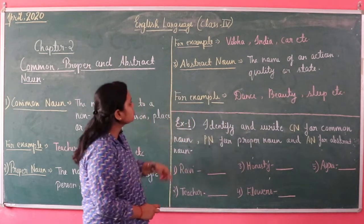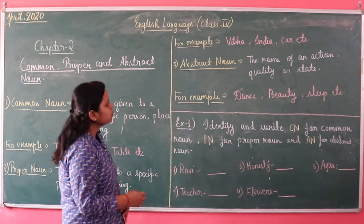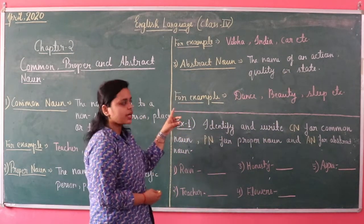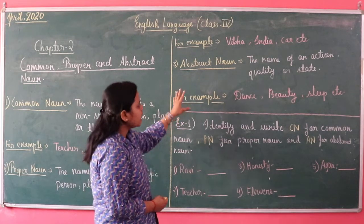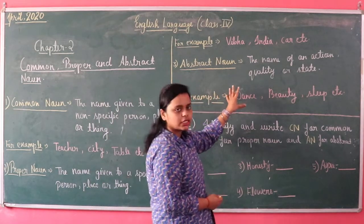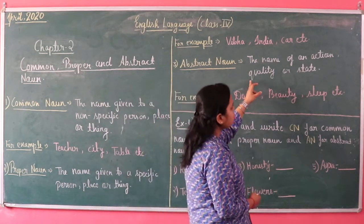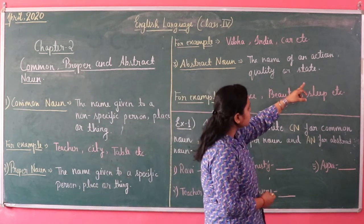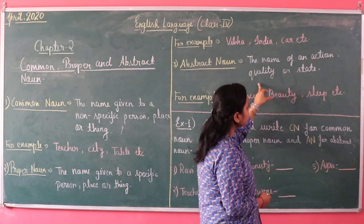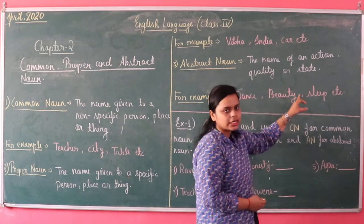Now let's move to the third one, that is abstract noun. The definition is the name of an action, quality, or state.